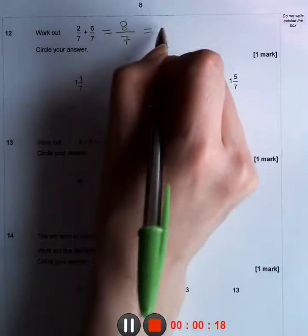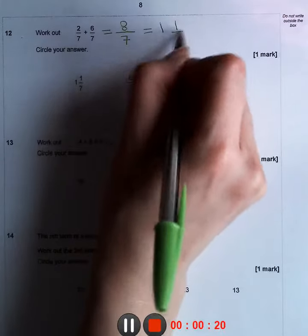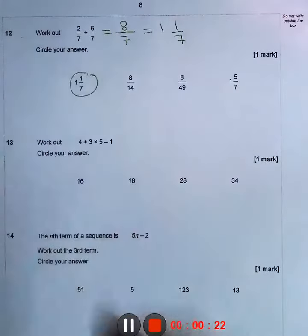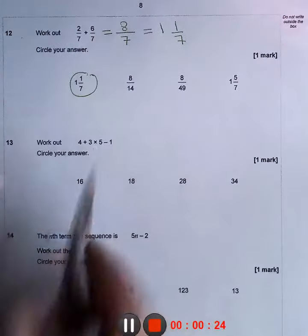This converts to 1 and 1 over 7. For the second question, we need to work out 4 plus 3 times 5 minus 1.